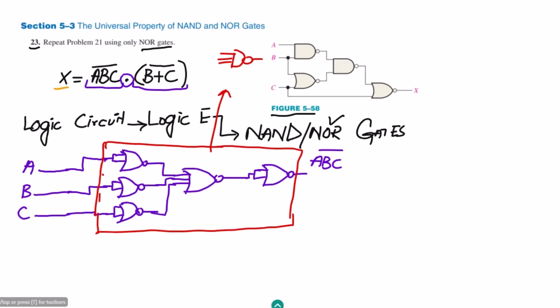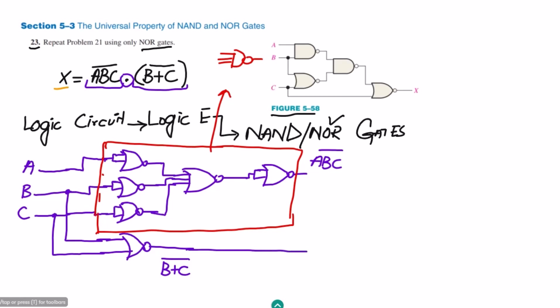The second term we need is (b+c)'. This is a very straightforward NOR operation. So let me use a NOR gate here — to one input apply b and to the second input apply c — and at the output of it I will get (b+c)'.